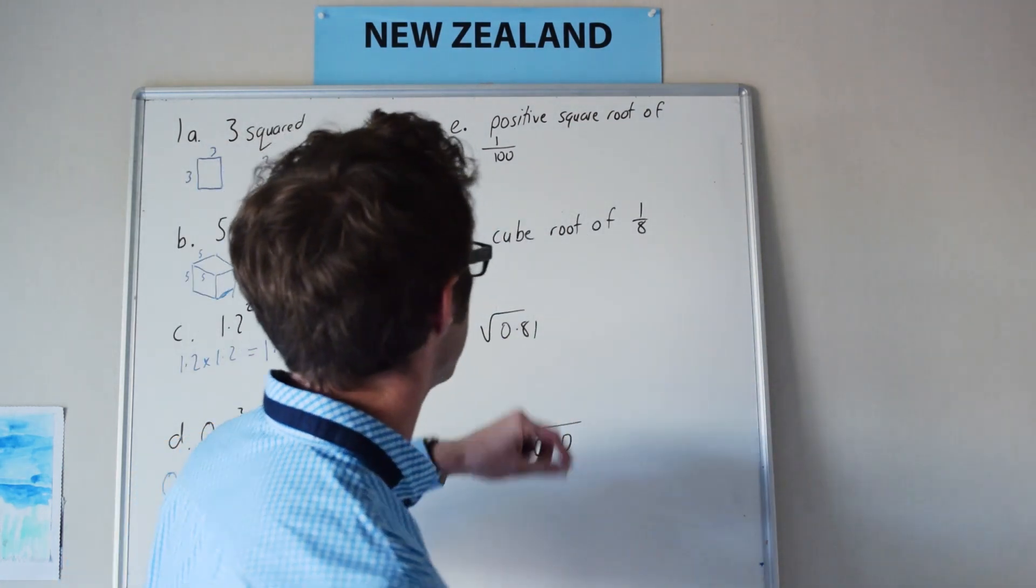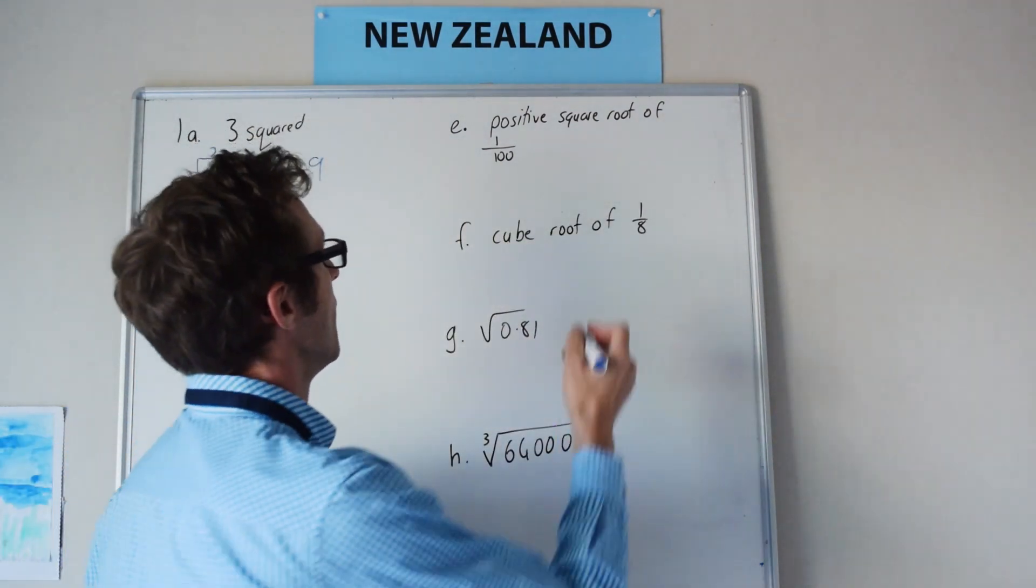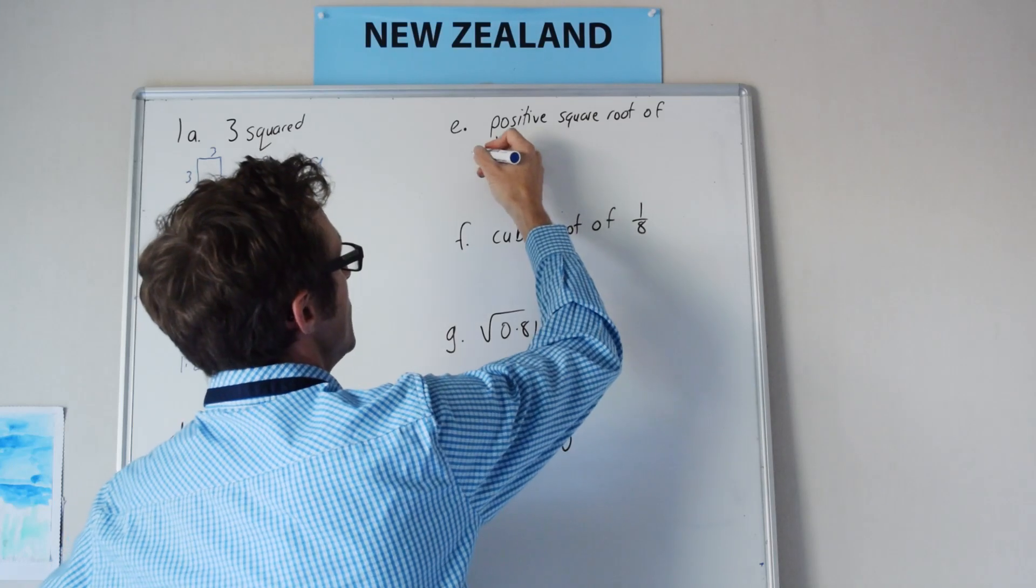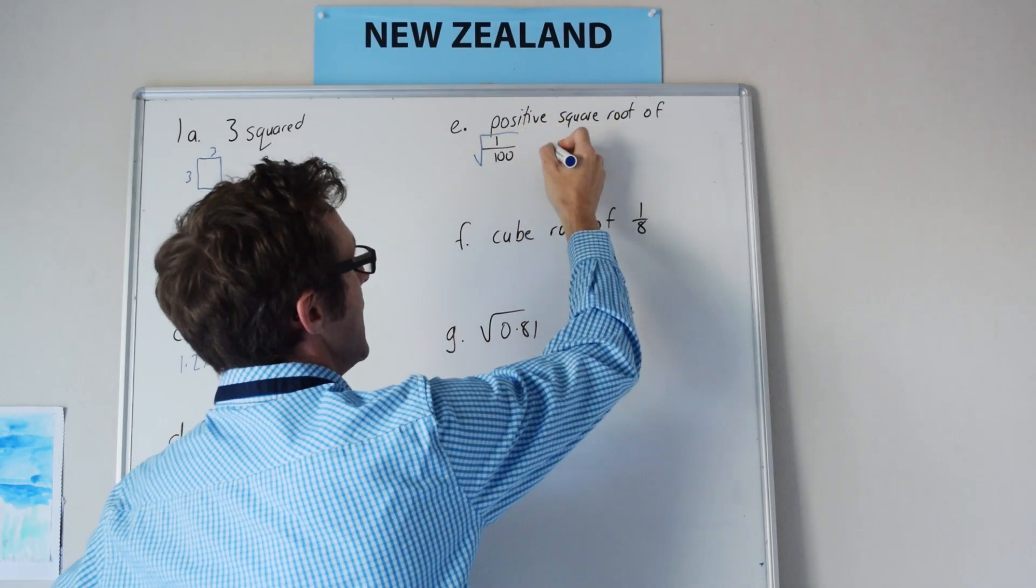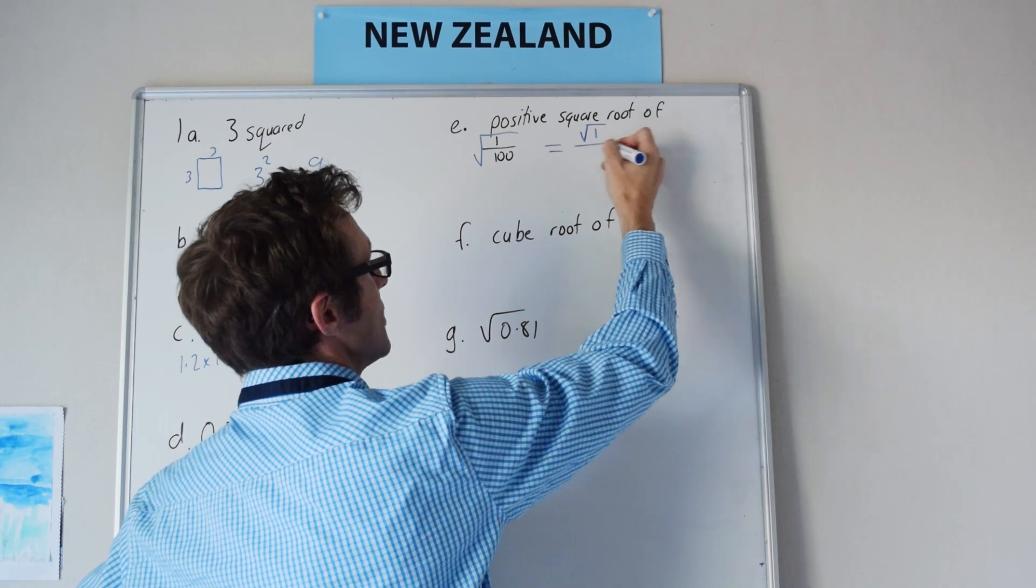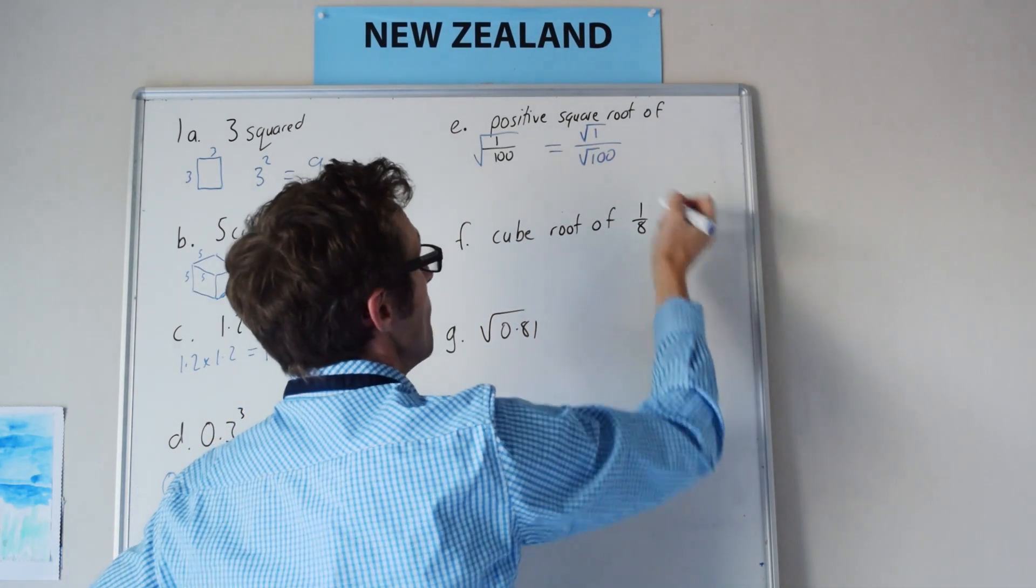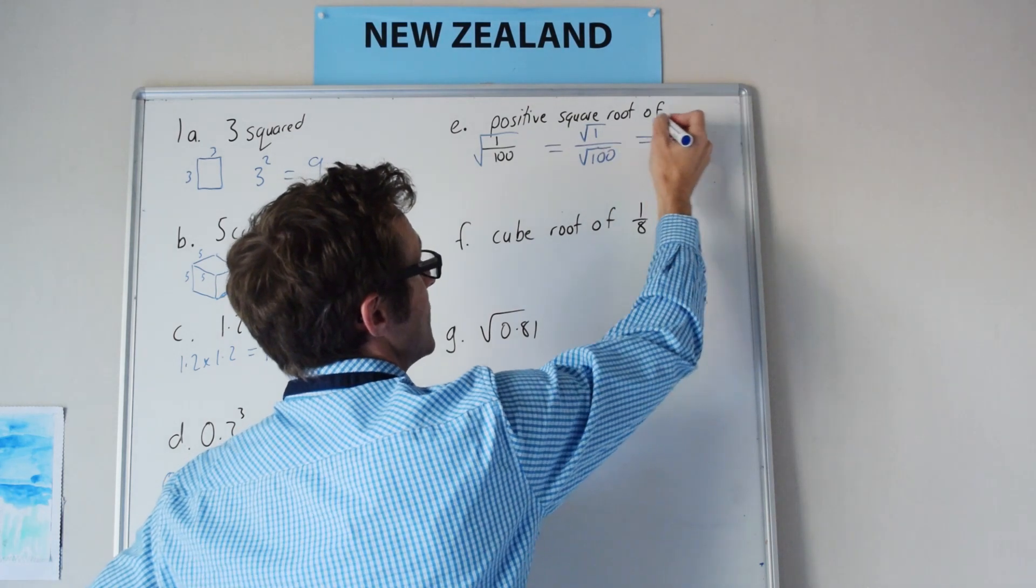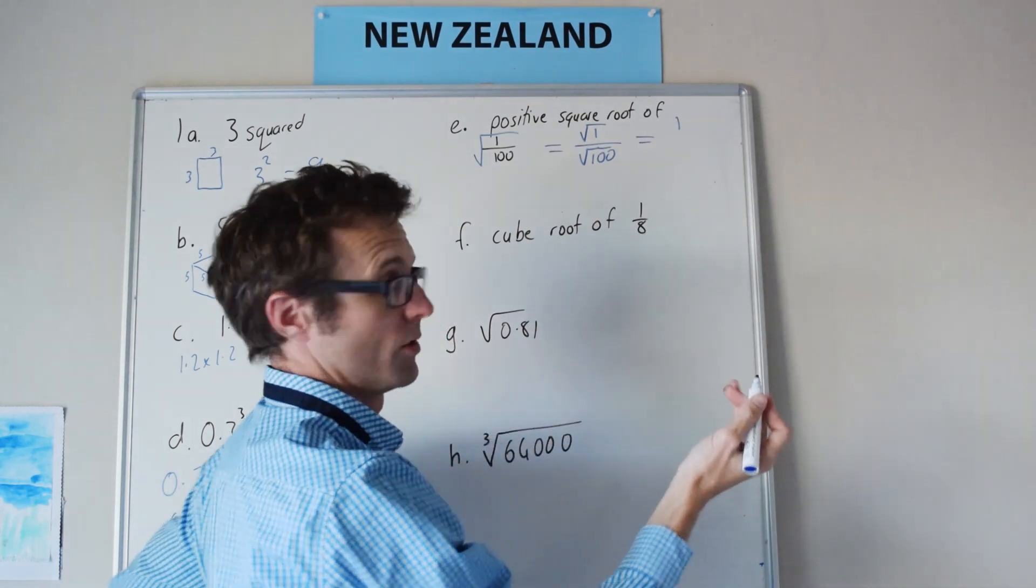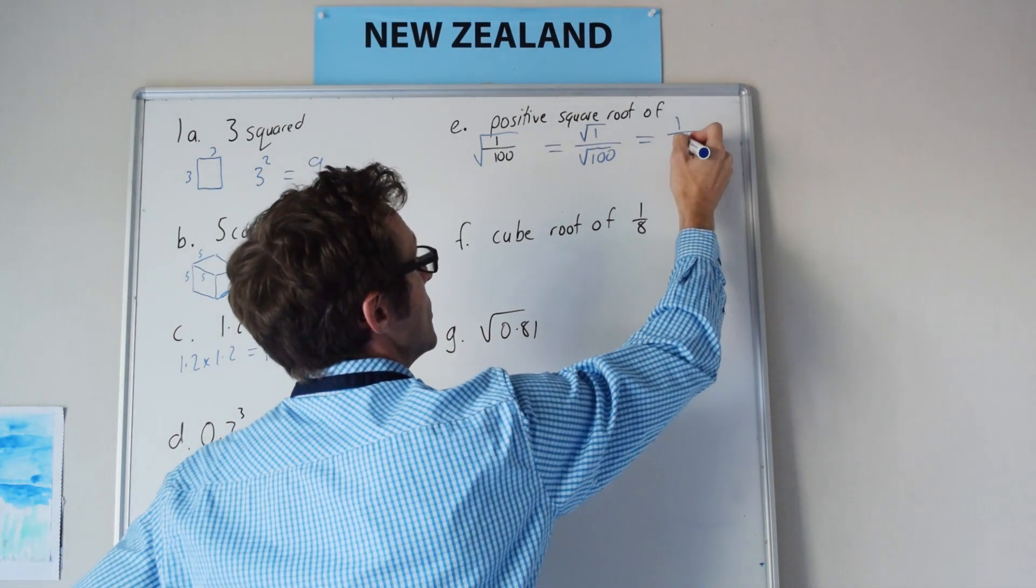Now let's move over to this other side here, the positive square root of 1 over 100. Now another way of doing square root of a fraction is the square root of the numerator over square root of the denominator, and so in this case it's going to be 1, square root of 1, it's 1 over square root of 100 which is 10.